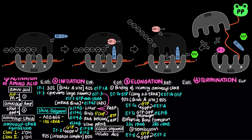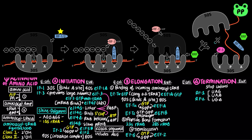Translational termination is stimulated by the stop codons UAA, UAG, and UGA. In prokaryotic termination, release factor 1 (RF1) recognizes UAG and UAA, whereas release factor 2 (RF2) recognizes UGA and UAA. RF1 or RF2 mimics tRNA, inducing peptidyltransferase to transfer the growing polypeptide to a water molecule rather than another amino acid. Hydrolysis of the ester linkage between the nascent polypeptide and the tRNA in the P site releases the completed polypeptide. Release factor 3 triggers dissociation of mRNA, uncharged tRNA, and release factors 1, 2, and 3.